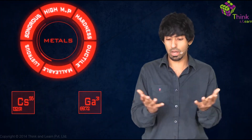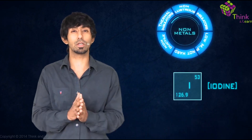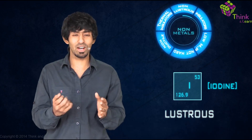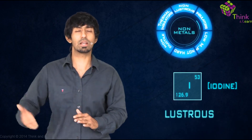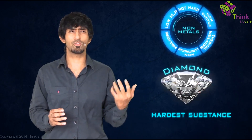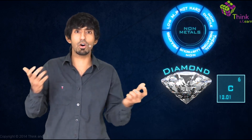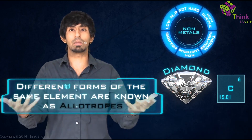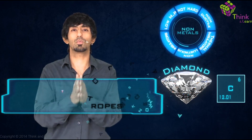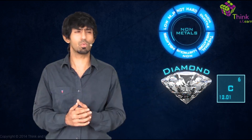So cesium and gallium have very low melting points, but they're still metals. Now iodine is not a metal — it doesn't show any other metal properties — but it is lustrous. So it begins to pique your curiosity. How can a substance that is so different suddenly show one property that a metal does? Similarly, non-metals usually have low melting points and are not very hard, and metals are supposed to be hard.